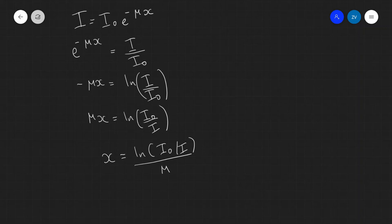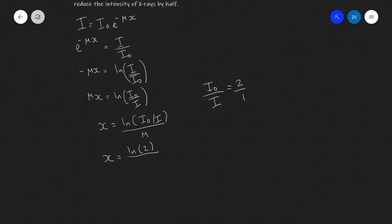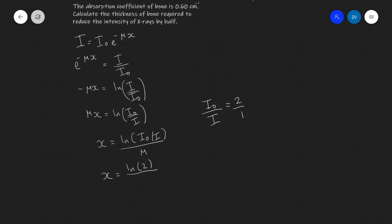Okay now because we want to reduce the intensity by a factor of a half, I₀ is our initial intensity, I is our final intensity. So they're going to be in a ratio of two to one if it is reduced by a half. So what we're really doing is saying that x will be equal to the ln of 2 divided by our absorption coefficient which in this case is 0.6 centimeters.